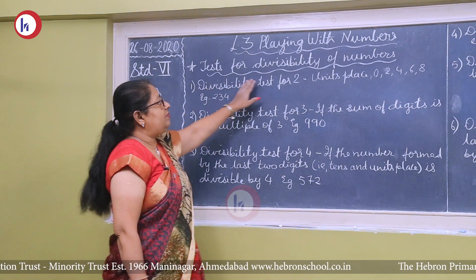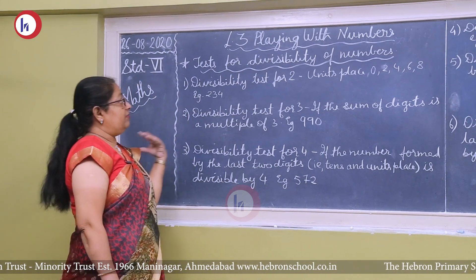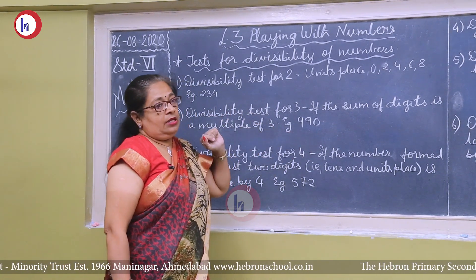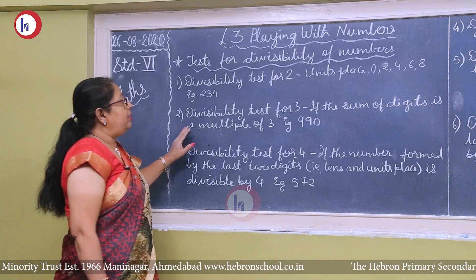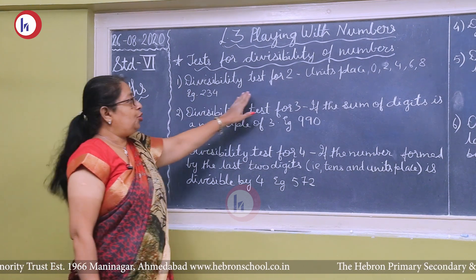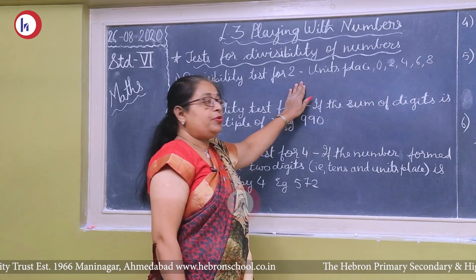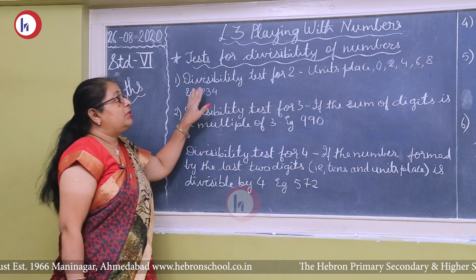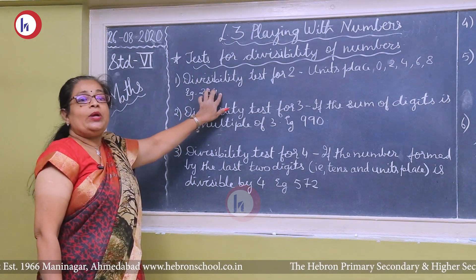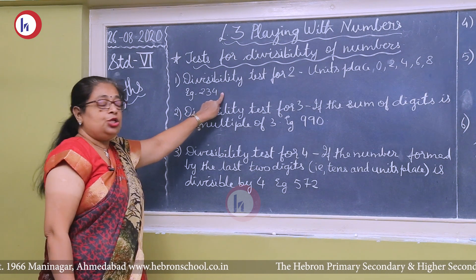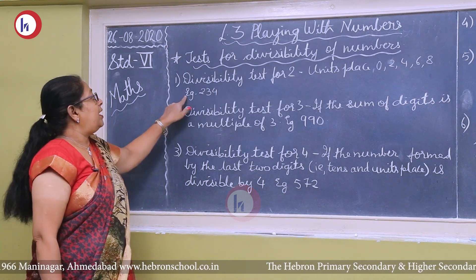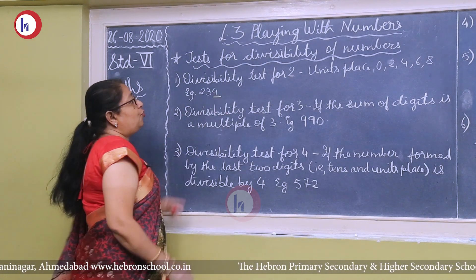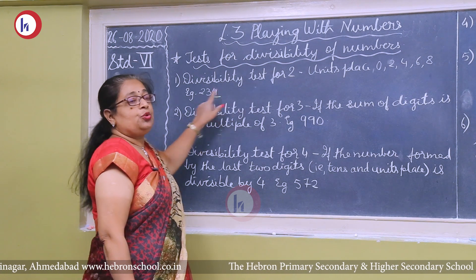Next we come to the divisibility tests for 2, 3, 4, 5, 6, 8, 10, and 11. First, the divisibility test for 2: any number which has unit place as 0, 2, 4, 6, or 8 is divisible by 2. For example, 234 — the unit place is 4, which is divisible by 2, so 234 is divisible by 2.